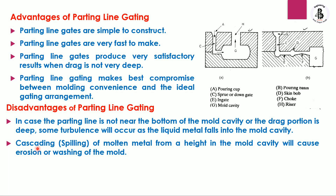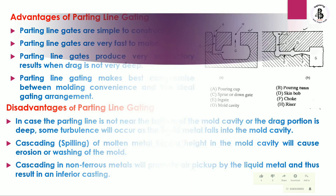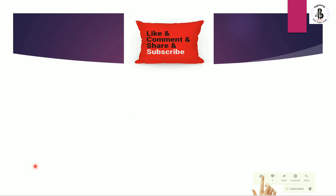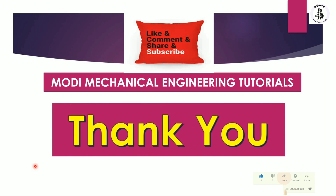Cascading or spilling of molten metal from a height into the mold cavity causes erosion and washing of the mold cavity. In non-ferrous metals, cascading promotes air pickup by the liquid metal, resulting in inferior castings. I hope you understand this — if you like this video, please subscribe and share more of the Mechanical Engineering Tutorials. Thank you so much, and keep watching.